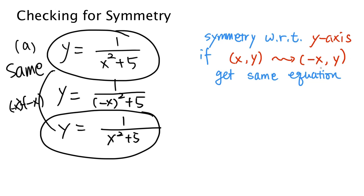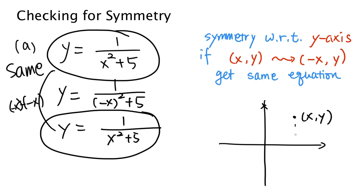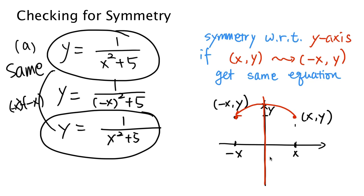Why do we test negative x comma y? Here is the coordinate plane. Suppose (x, y) is somewhere here — then where is (-x, y)? This is the x coordinate of the point; the negative x is on the other side. And since they have the same y coordinates, (-x, y) is on the same level. So if you look at these two points, the y-axis plays the role of a mirror. The point at (x, y) is reflected over to the other side to get to the point at (-x, y). That's why the y-axis plays the role of the mirror in symmetry with respect to the y-axis.